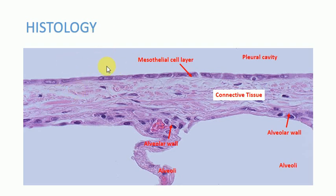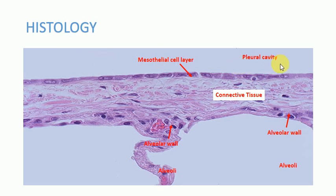This is the histological presentation of the pleural membranes. You can see the alveoli or air sacs, the alveolar wall lined by a serous membrane, and connective tissue. The pleural cavity is visible, with the parietal pleura on the outer side and the visceral pleura on the inner side. The visceral pleura is lined by mesothelial layers — small cuboidal cells called the mesothelial layers.